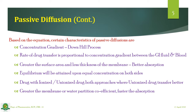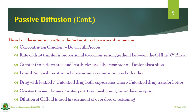Fifth, membrane/water partition coefficient: greater the partition coefficient, greater the absorption. Sixth, dilution of GI fluid: this is an approach used in overdosing or poisoning — by diluting the GI fluid, the concentration of the overdose or poisonous drug is reduced, thereby slowing or stopping its absorption. This is a practical application of passive diffusion principles.